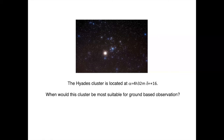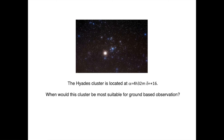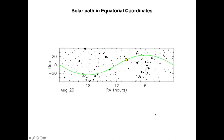Based on this knowledge, we can already answer the question. The Hyades cluster is located at right ascension alpha equal to 4 hours 32 minutes, and declination delta equal to 16 degrees. When would this cluster be most suitable for ground-based observation? To answer this question, you don't need the declination — you only need the right ascension of 4 hours 30 minutes. You want the sun as far away from it as possible, so the sun should be diametrically opposed, meaning the right ascension of the sun should be 16 hours and 32 minutes — on the opposite side of the sky, so the cluster is visible all night long.